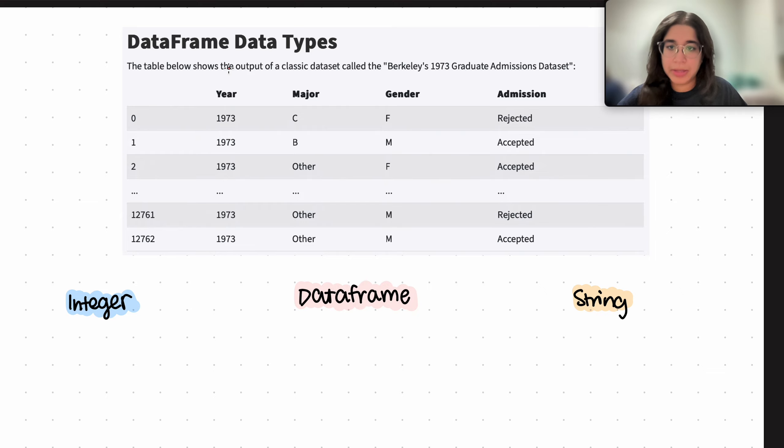So here it says a table below shows the output of a classic data set called the Berkeley 1973 grad admissions data set. We want to figure out what type of data types are included in this data frame.